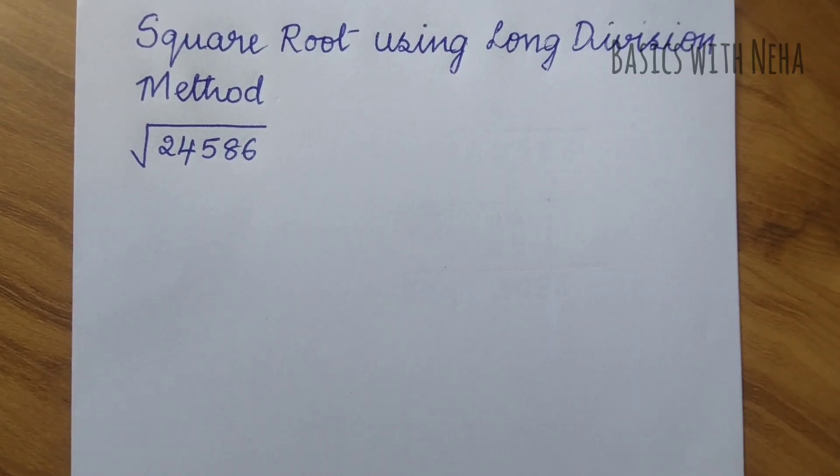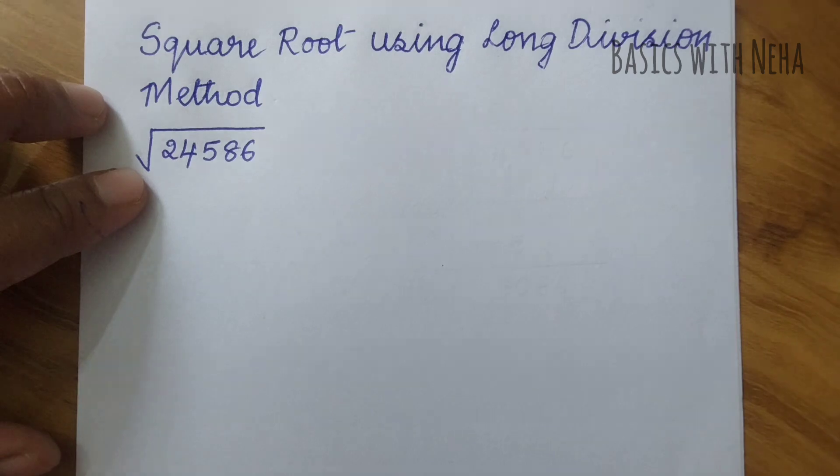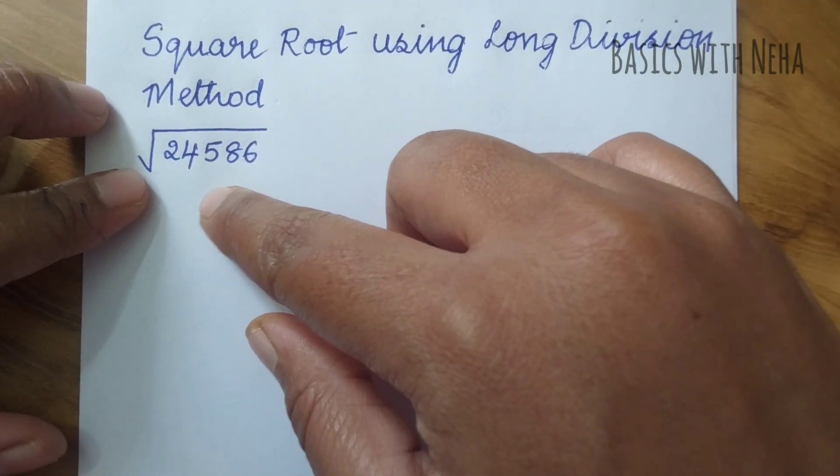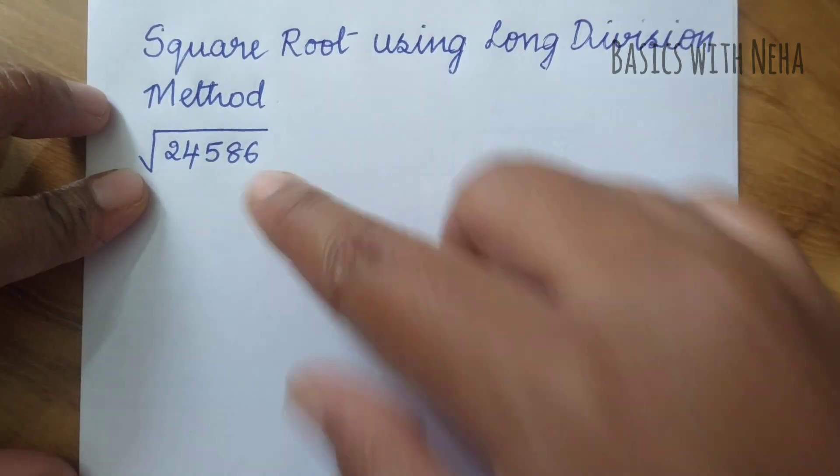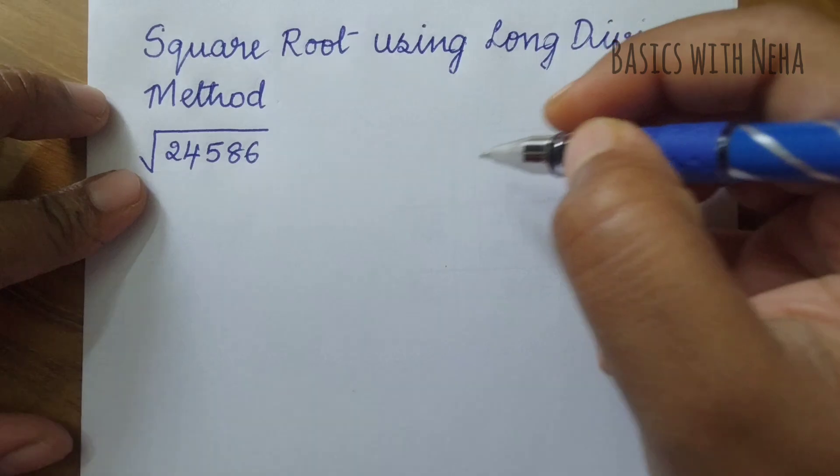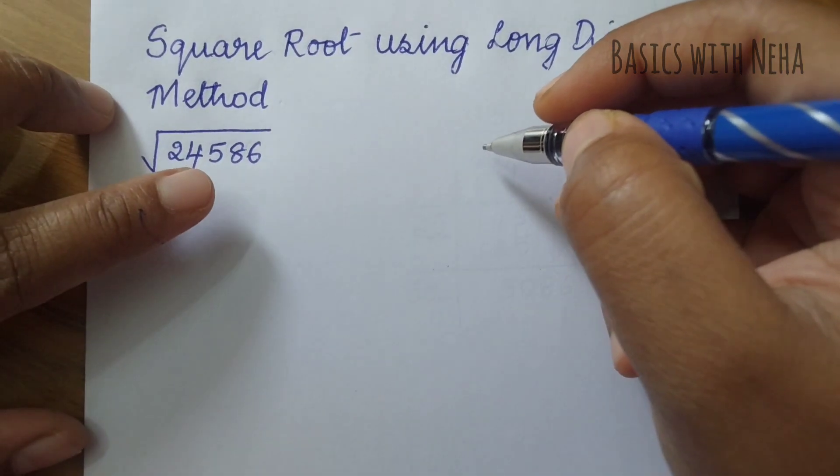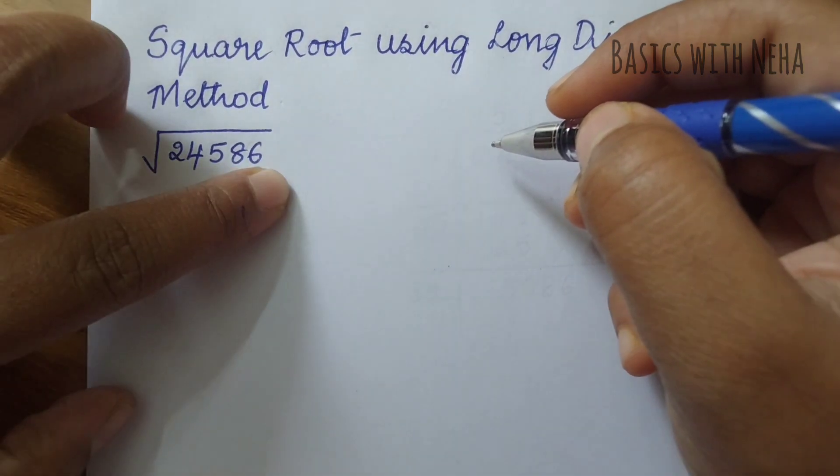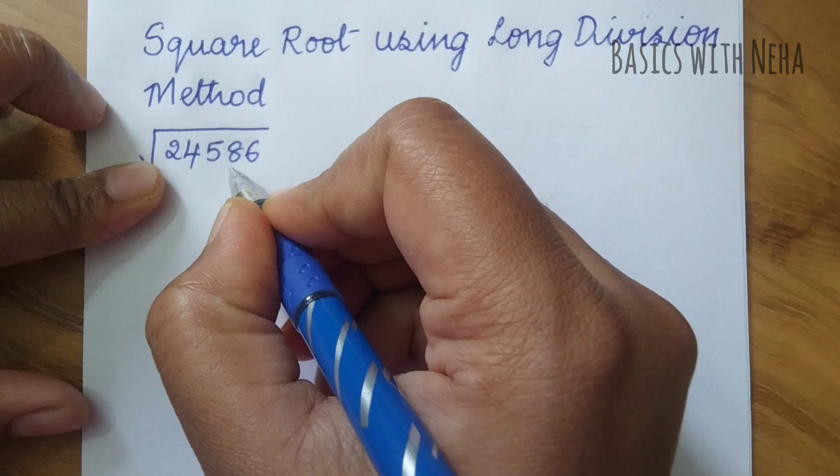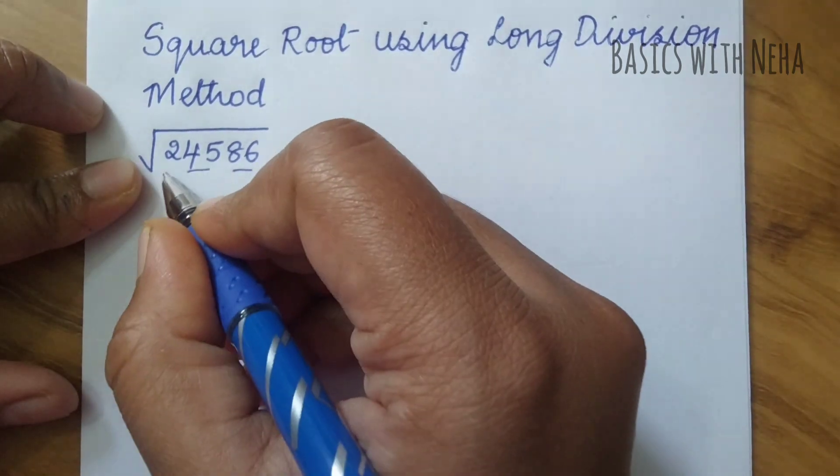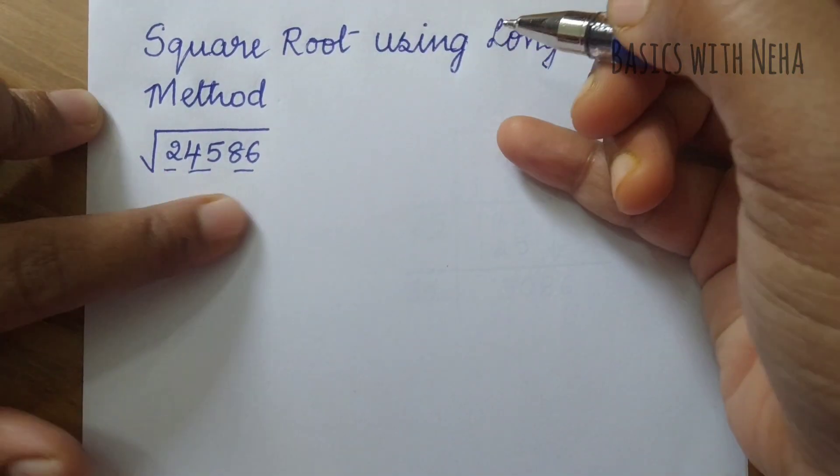Hello, welcome back to my YouTube channel. In today's video, let's find the square root using long division method for 24586. To use the long division method, we have to first group the number into twos from the right side. So 86 will be one group, 45 will be another, and 2 will be separately one group.